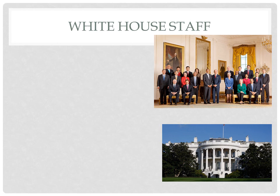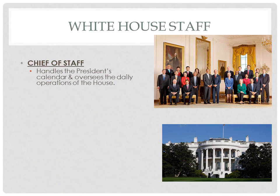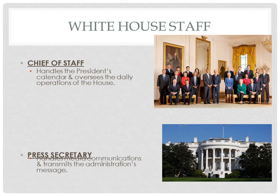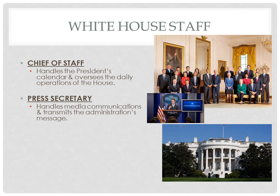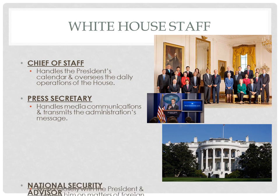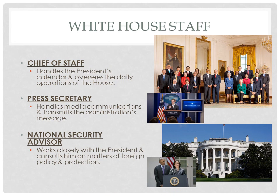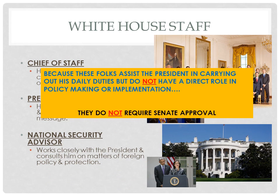Closest to the president on a daily basis are the members he chooses to employ on his White House staff. The chief of staff has the highest ranking spot on the staff, handling all the president's appointments and personal calendar and overseeing daily operations of the White House. The press secretary handles all media communications and transmits the message of the administration to the press each day. The national security advisor, a very important post since the 1970s, works closely with the president and consults with him on matters of foreign policy and protection. None of the White House staff have a direct role in policymaking, and therefore no one on the White House staff has to be approved by the U.S. Senate.